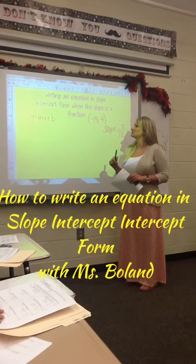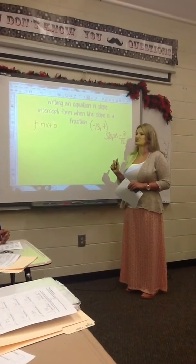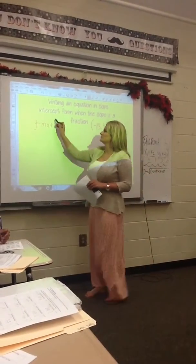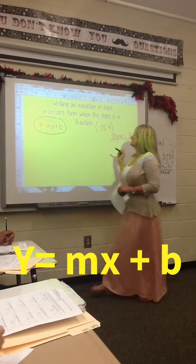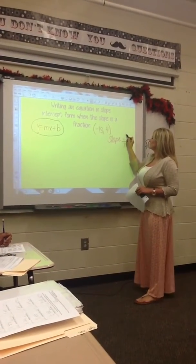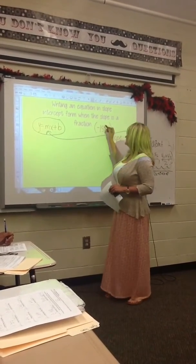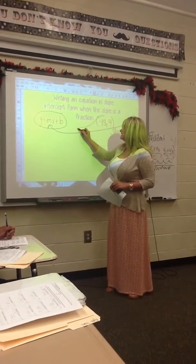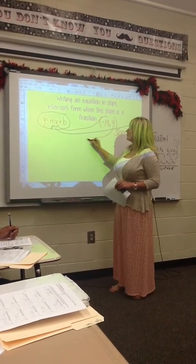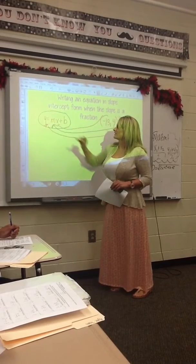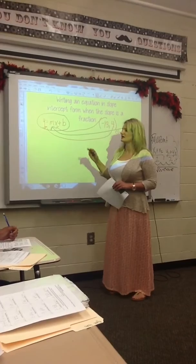I'm going to teach you how to write an equation in slope-intercept form when you use a fraction for slope. You're going to use the equation y equals mx plus b, plug in the slope for m, plug negative 13 in for x, and 4 into y. This is going to isolate b so that we can solve for the y-intercept.